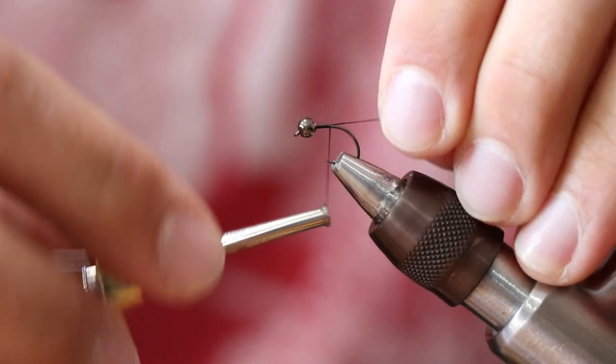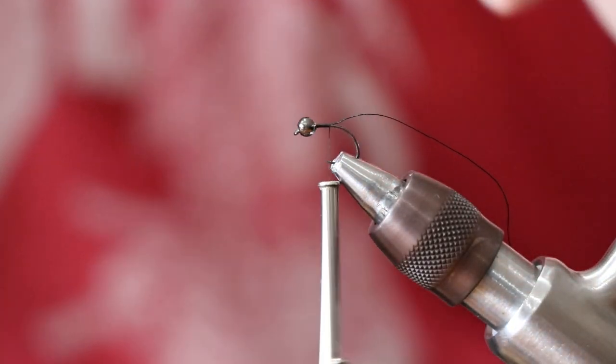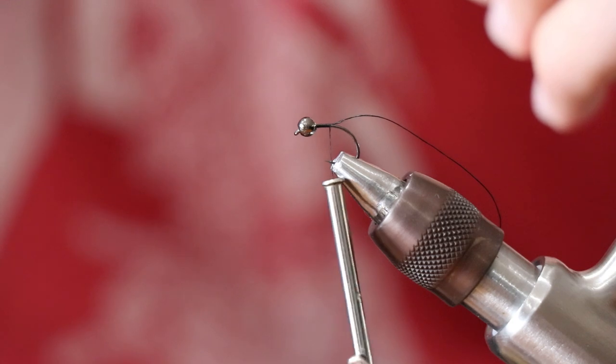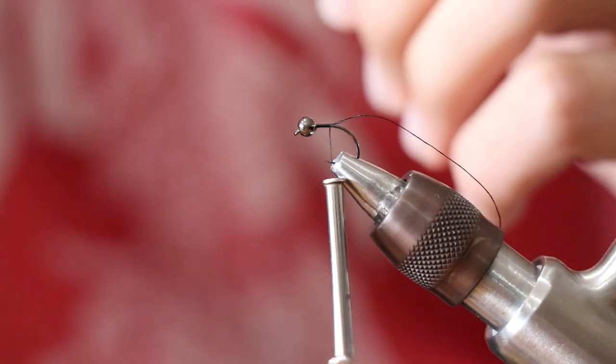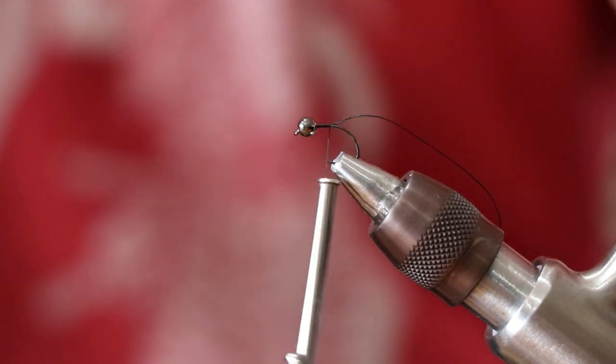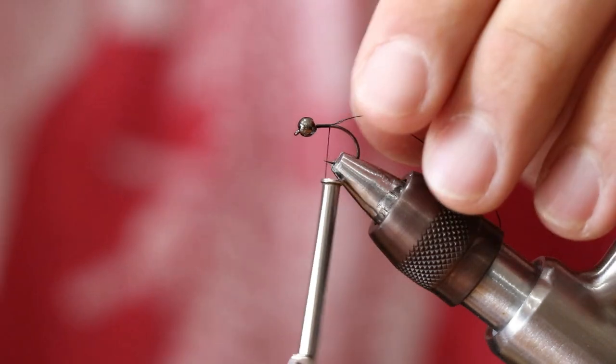So in the vise, starting off with the hook, we have the Umpqua X series XC 300 BL in a size 14 and then a 2.8 millimeter tungsten slotted gunmetal bead.